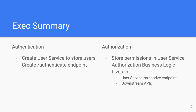To handle authentication, you'll want to create a user service to store your users. This supports the principles of single responsibility and single source of truth for our data. That user service can then support an authenticate endpoint, which your API gateway or your individual microservices can query against. To handle authorization, you'll want to store and associate permissions to users in the user service. You can handle your authorization business logic in two ways: you can build out an authorized endpoint on your user service that your microservices can query, or you can delegate authorization business logic to each of your individual microservices. There are various trade-offs between these two paths that I'll get into later on in this talk.